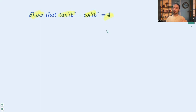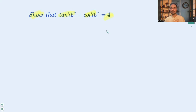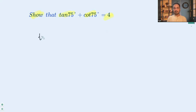First we'll find out what tan 75° is. If we know tan 75°, we'll be able to find cot 75°, because cot θ equals 1 over tan θ — so cot is simply the reciprocal of tan. Then we'll combine tan 75° and cot 75° and try to get the right-hand side. So let's get started. Tan 75° can be written as tan(45° + 30°).